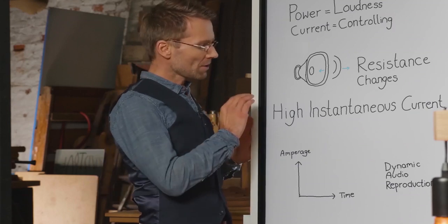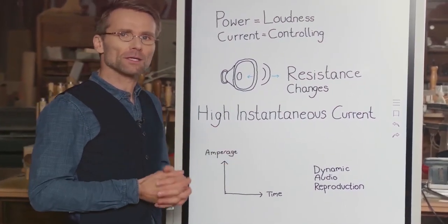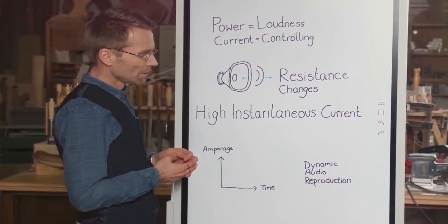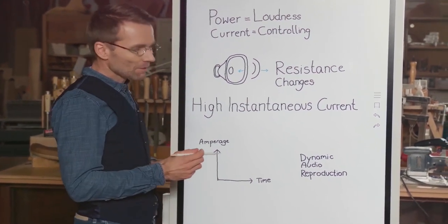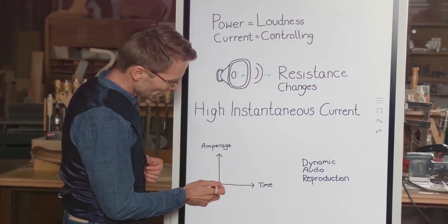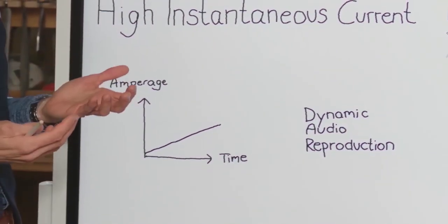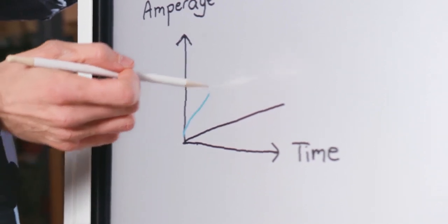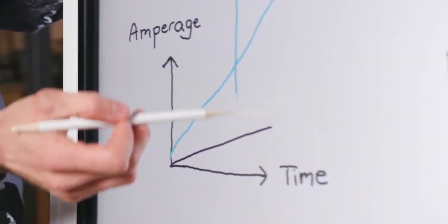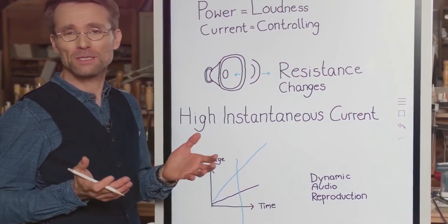At Onkyo, we rely on a high instantaneous current capability — HICC. That's the most important thing in an amplifier, to actually be able to react to dynamic situations. Let's look at this chart for a second. At any given time, you need to output a certain current, a certain amperage. If you think of this as a conventional amplifier with a certain output of amperage at a time, Onkyo has a much higher output. So at any given time in the musical piece, you've got a much higher current, giving you much more control over the dynamic situations your music or film presents.